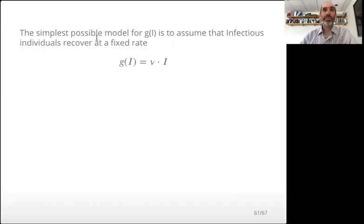For the simplest possible model for recovery, we'll just say that it's a constant rate, this parameter nu, which is often set based on knowing something about how long someone becomes infected. So if someone's infected, typically stays infected for on average 10 days, then the recovery rate is 0.1, 1 over 10.